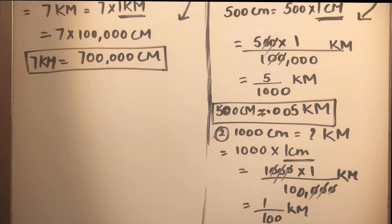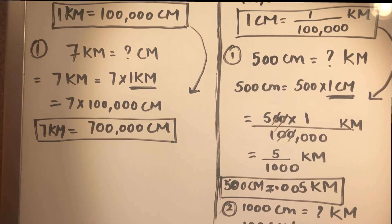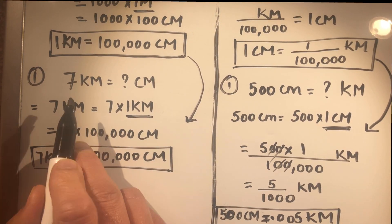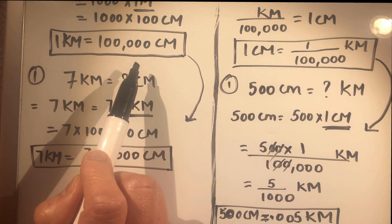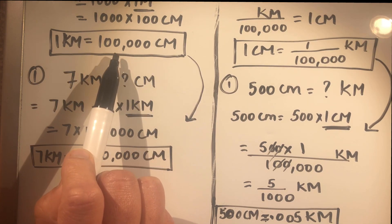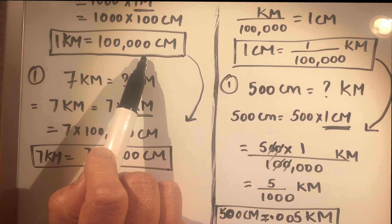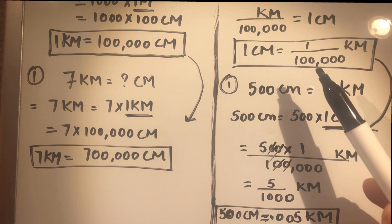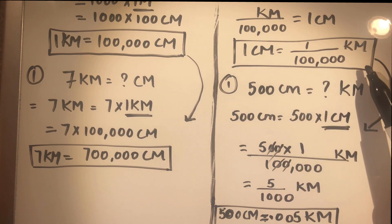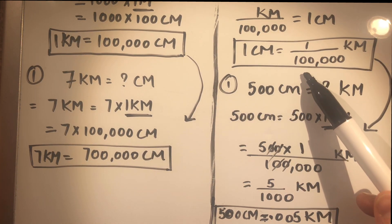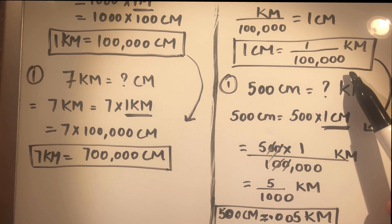To summarize: to convert from kilometers to centimeters, multiply the kilometer quantity by one hundred thousand. To convert from centimeters to kilometers, divide the centimeter quantity by one hundred thousand.